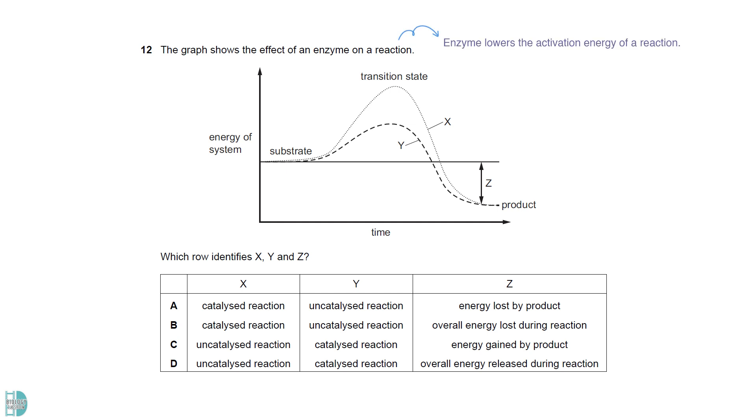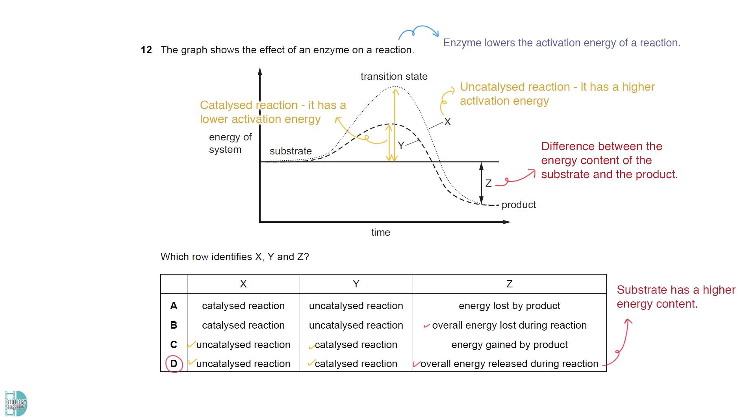Enzyme lowers the activation energy of a reaction. So X is an uncatalyzed reaction with a higher activation energy, while Y is a reaction catalyzed by an enzyme. Z shows the difference between the energy content of the substrate and the product. In this case, the substrate has more energy than the product, indicating that energy was released in the reaction.